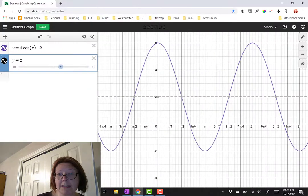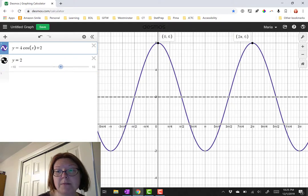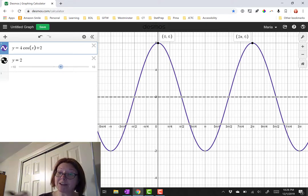All right, what else do we know? Well, going back to our graph, it looks like we have a maximum point at 0, 6 and another maximum point at 2 pi, 6, which means that a full cycle takes 2 pi units.